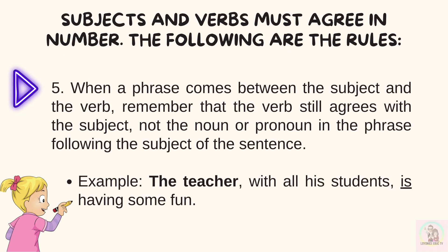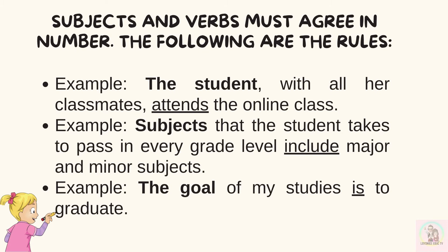Number five, when a phrase comes between the subject and the verb, remember that the verb still agrees with the subject, not the noun or pronoun in the phrase following the subject. Example: the teacher with all his students is having some fun. More examples: the student with all her classmates attends the online class. Subjects that the student takes to pass in every grade level include major and minor subjects. The goal of my studies is to graduate.